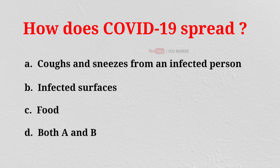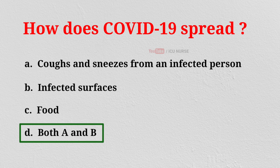How does COVID-19 spread? A. Coughs and sneezes from an infected person. B. Infected surfaces. C. Food. D. Both A and B. And the correct answer is D: Both A and B.